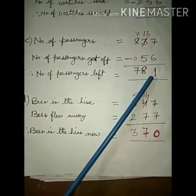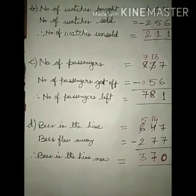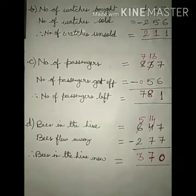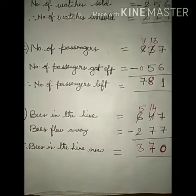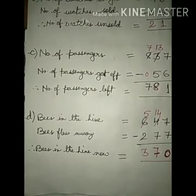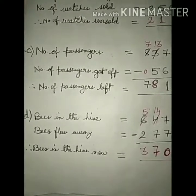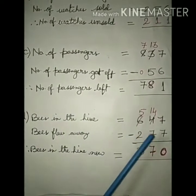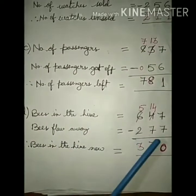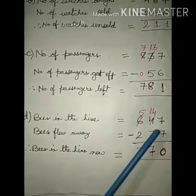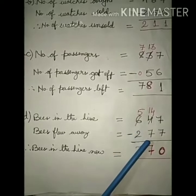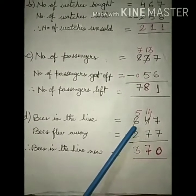Then D: There are 647 bees in the hive. 277 more bees flew away from it. How many bees are there in the hive now? Answer: Bees in the hive is equal to 647. Bees flew away: minus 277.